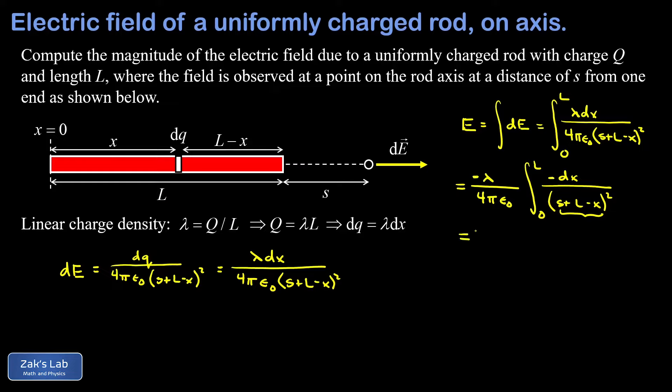When I integrate one over something squared that's the same as integrating something to the negative two power and that integrates to the same expression to the negative first divided by negative one. So that negative one produced by the antiderivative will keep that in the numerator and I end up with the same expression to the negative first power in other words to the first power in the denominator. So I have a negative one over s plus L minus x and we're evaluating this from zero to L.